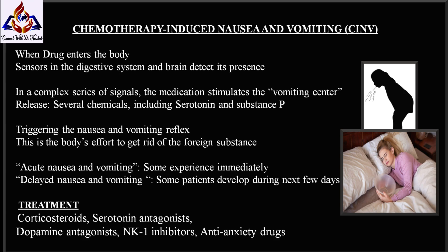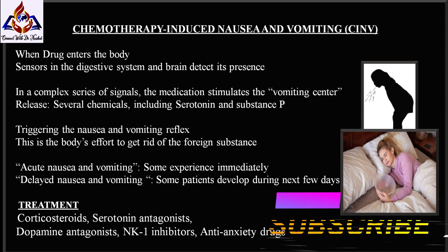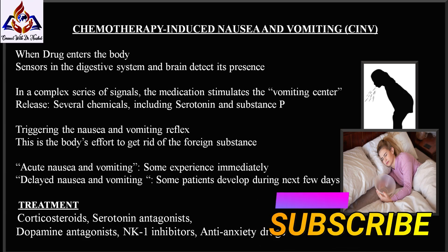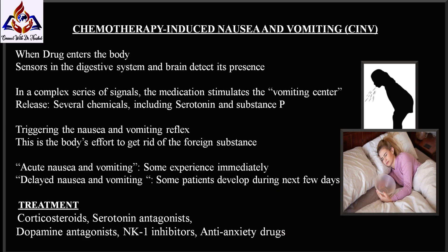Serotonin antagonists block natural substances from sending a signal to the brain that causes vomiting. Examples of this type of drug include ondansetron and granisetron. Dopamine antagonists such as metoclopramide are often prescribed for breakthrough nausea and vomiting.